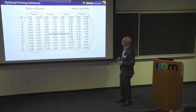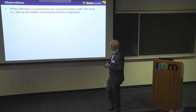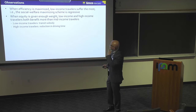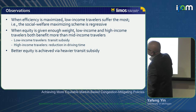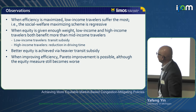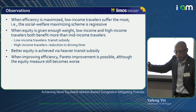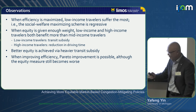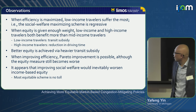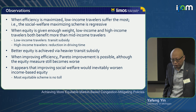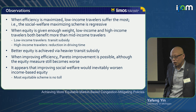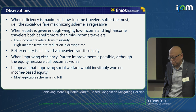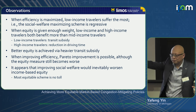To summarize: when efficiency is maximized, low-income people suffer the most — the social welfare maximizing scheme is regressive. When you give equity enough weight, low-income and high-income people benefit more than mid-income people. Better equity is achieved by heavier transit subsidy. And it seems that for this particular example, improving social welfare will inevitably worsen income-based equity, so if you want to improve both simultaneously, you may have to look at price differentiation or move beyond congestion pricing — which is why we discuss the cap-and-trade idea with tradeable mobility credits.